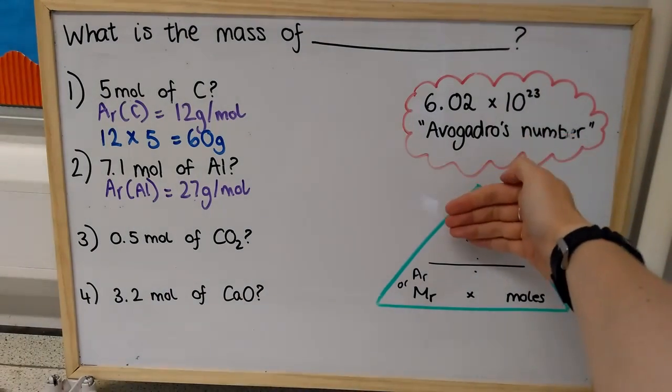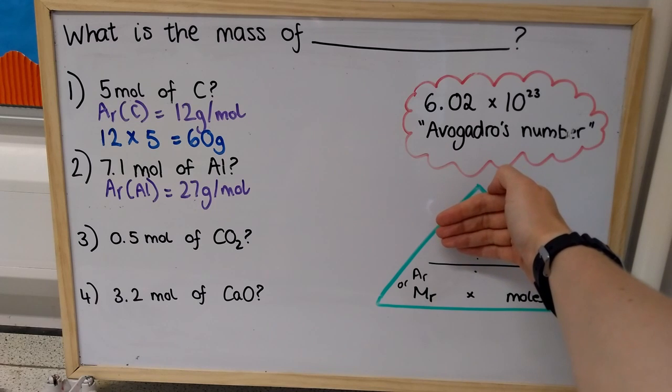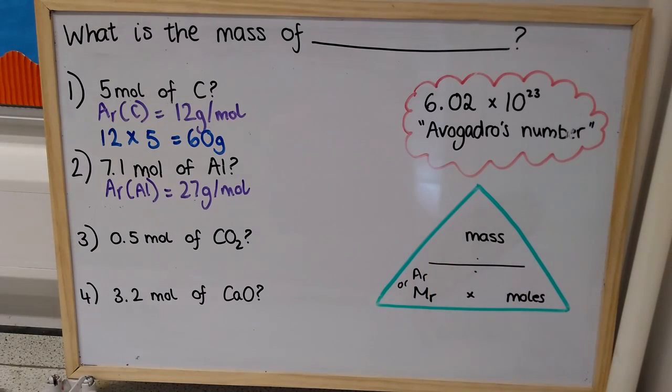Again, I'm going to cover up mass, because that's what I'm trying to work out, and do the relative atomic mass times the number of moles. And it doesn't matter that it's not an integer, it doesn't matter that 7.1 isn't a whole number, that's completely fine, because a mole is a really, really big number. So, it's completely reasonable for you to have less than a whole mole.